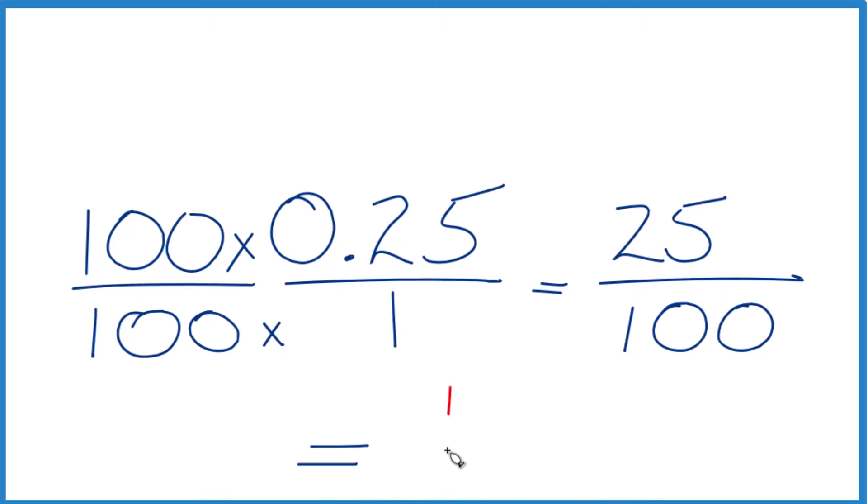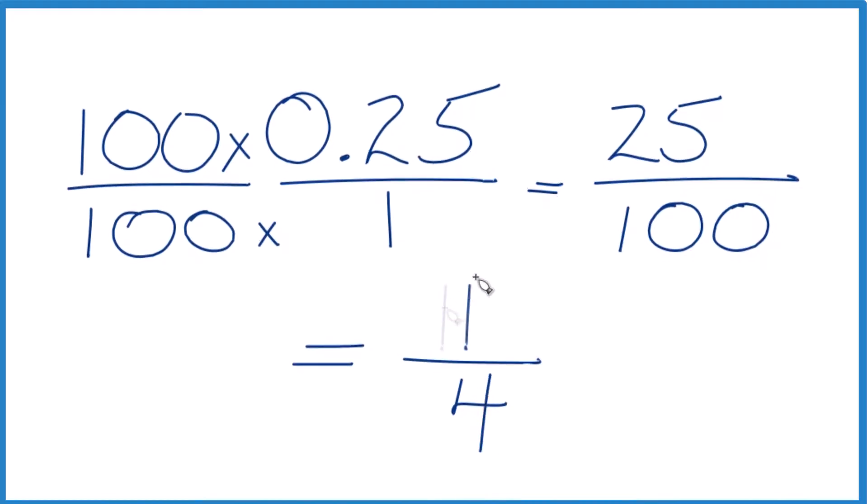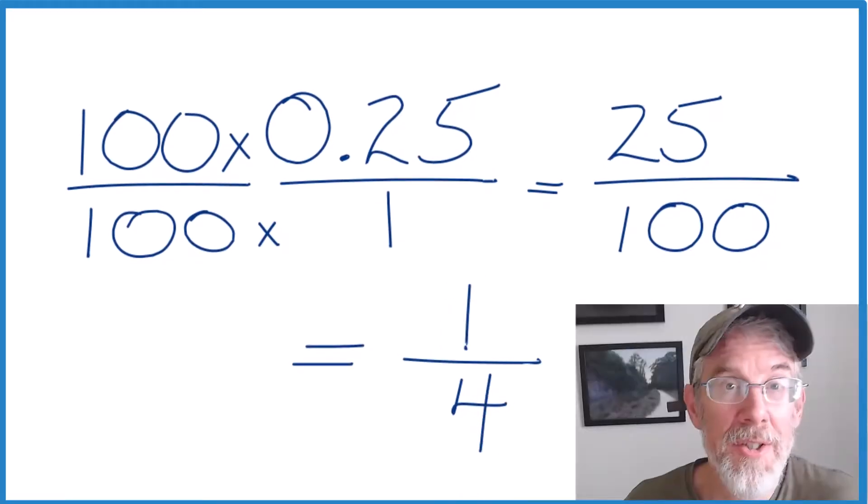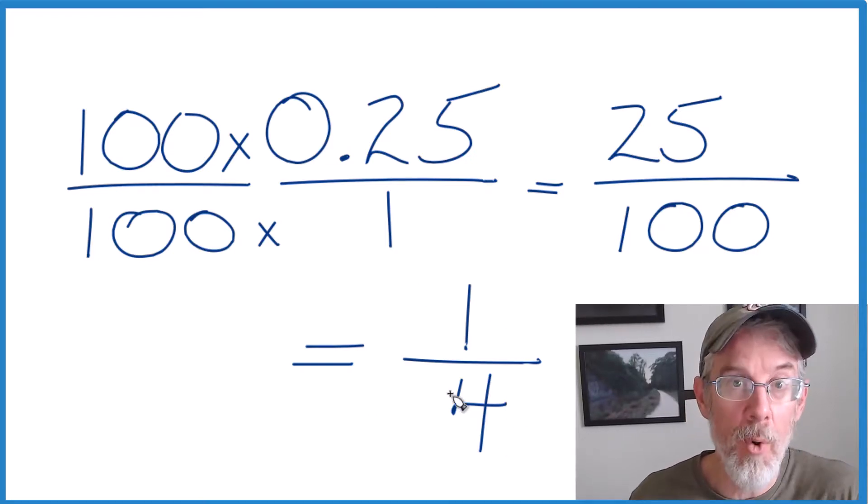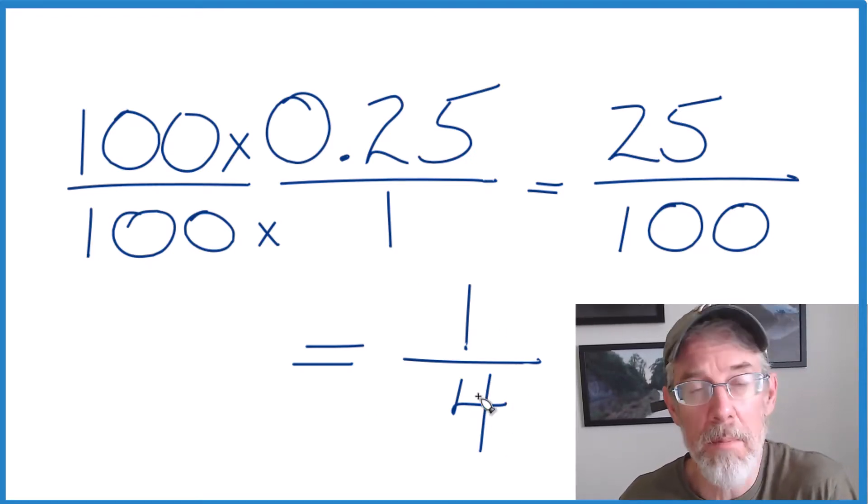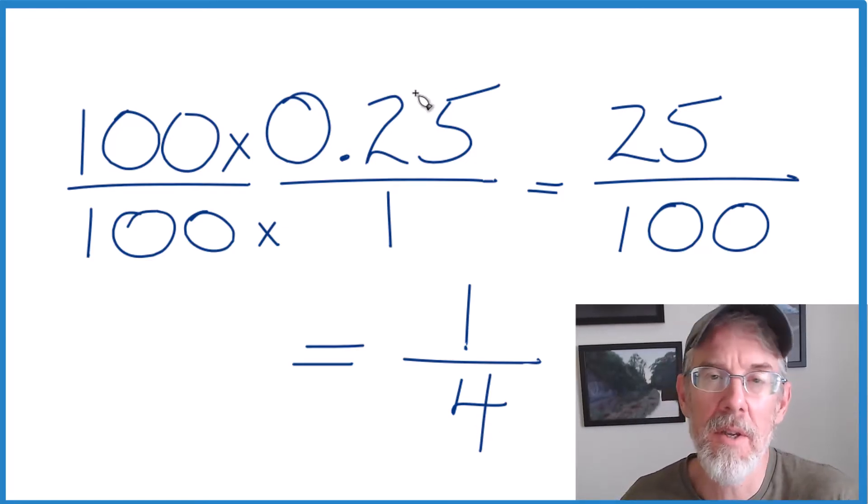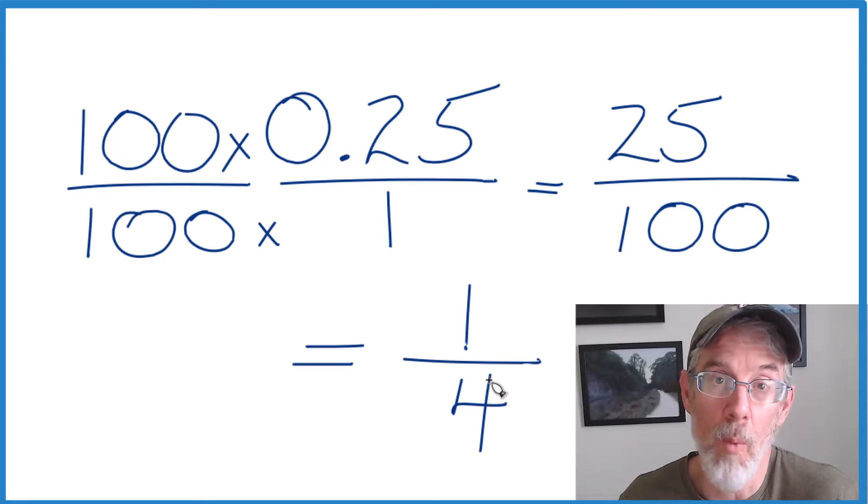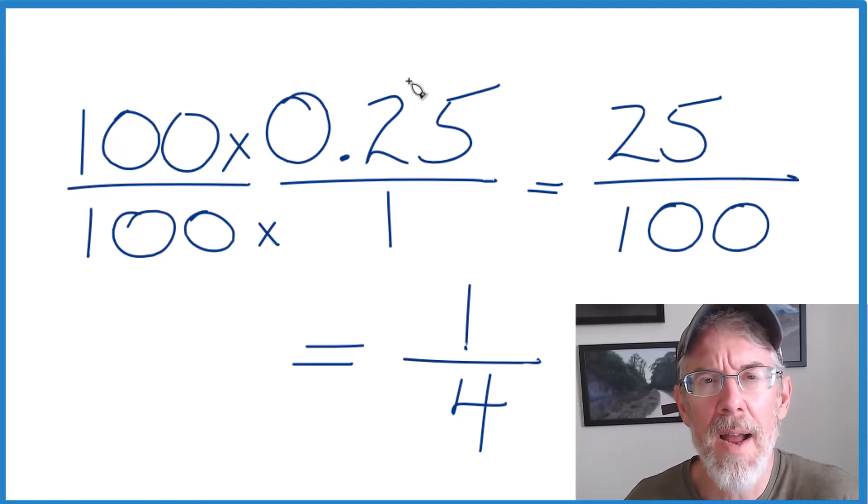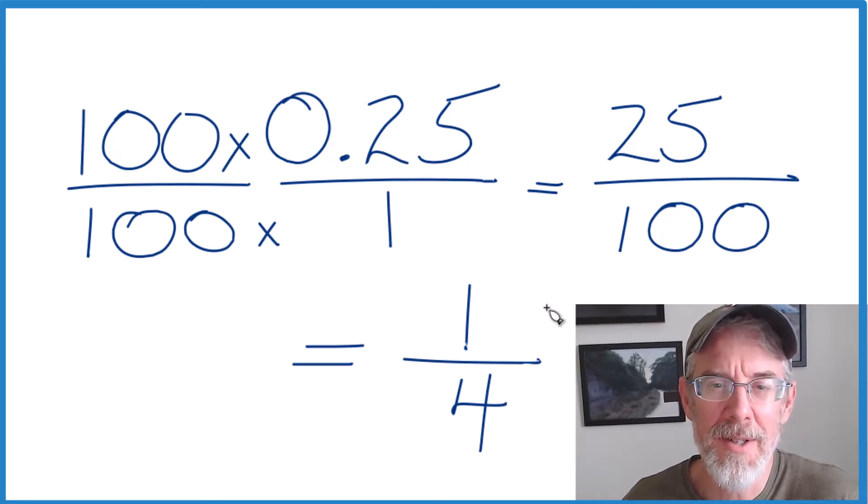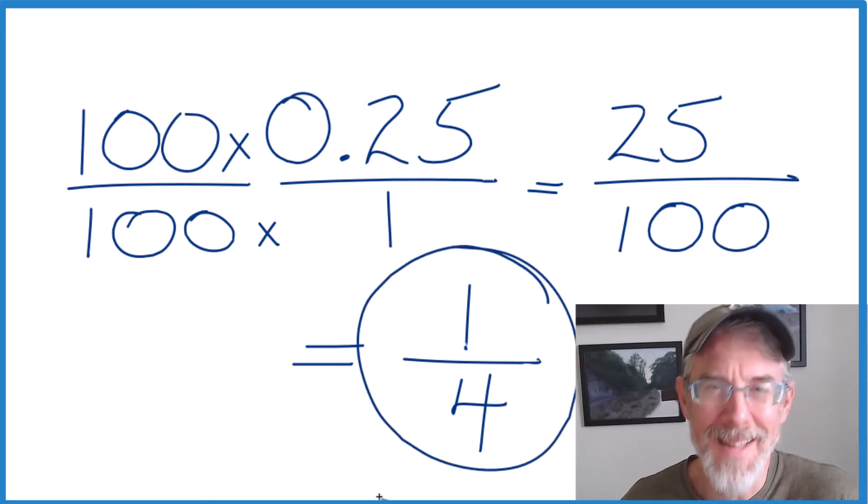So in answer to our question, the decimal 0.25, that equals the fraction 1 fourth. They're equivalent. Divide 1 by 4 on your calculator and you'll get 0.25. Just that they're represented, one is a decimal, one is a fraction. That's it. It's Dr. B converting the decimal 0.25 to a fraction. The answer, 1 fourth. Thanks for watching.